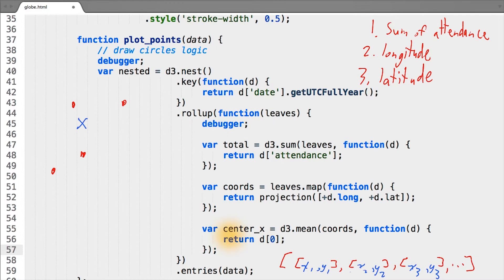We can do exactly the same to find out the center_y pixel value, to then return from our rollup function, so we know the attendance to plot and the x and y to actually plot it at.